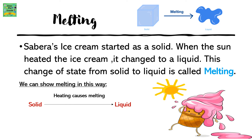Melting. Sebera's ice cream started as a solid. When the sun heated the ice cream, it changed to a liquid. This change of state from solid to liquid is called melting. We can show melting in this way: heating causes melting. Solid changes into liquid.